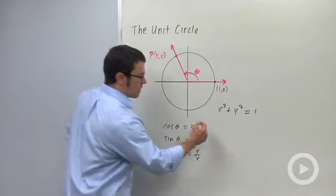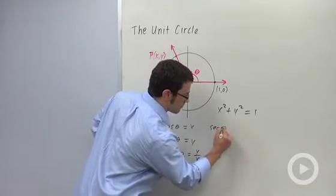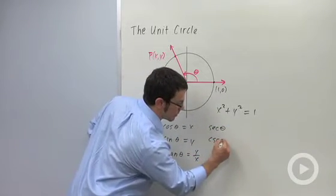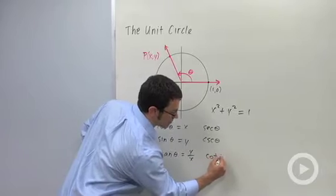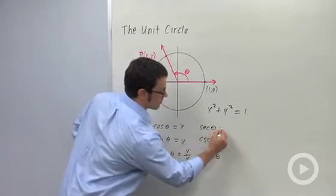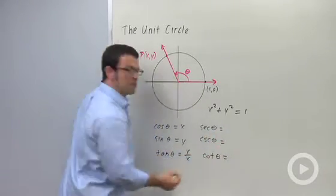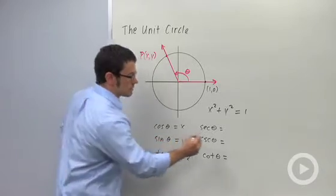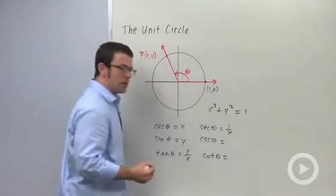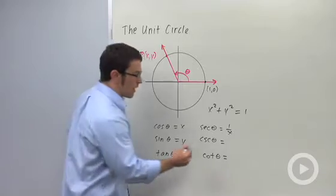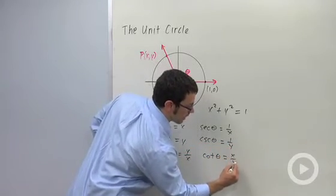Now the three new functions are secant theta, cosecant theta, and cotangent theta. Secant theta is defined as 1 over x, cosecant theta is 1 over y, and cotangent is x over y.